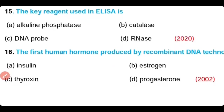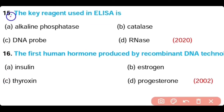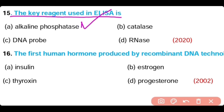Question 15: The key reagent used in ELISA is — alkaline phosphatase, catalase, DNA probe, or RNA? Option A is correct. Alkaline phosphatases and peroxidases are the key reagents used in ELISA. The ELISA technique is mostly used to detect viruses, especially HIV.